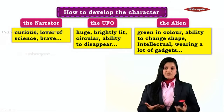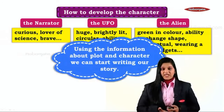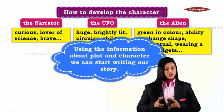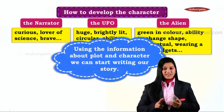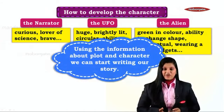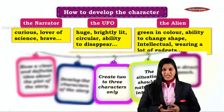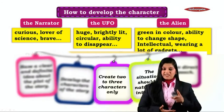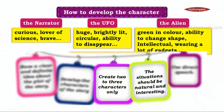This is the material we will use for developing the story. Now, using the information about the plot and the character, we can start writing our story. But before that, remember: create only two or three characters — just like here we have the narrator, UFO, and alien — and the situation should be natural and interesting. If you remember, we did this in how to develop a story.